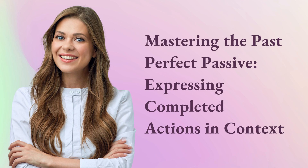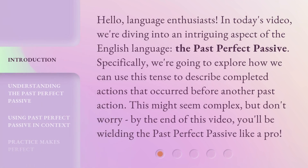Mastering the Past Perfect Passive: Expressing Completed Actions in Context. Hello, language enthusiasts. In today's video, we're diving into an intriguing aspect of the English language, the past perfect passive. Specifically, we're going to explore how we can use this tense to describe completed actions that occurred before another past action. This might seem complex, but don't worry — by the end of this video, you'll be wielding the past perfect passive like a pro.